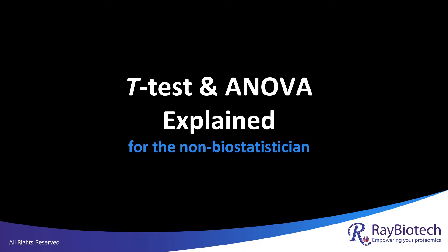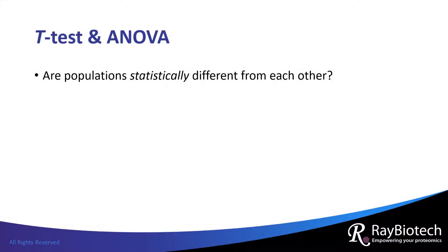This presentation will review T-Test and ANOVA, which are biostatistical methods that are commonly employed in research. T-Test and ANOVA, which stands for Analysis of Variance, determine whether populations are statistically different from one another.